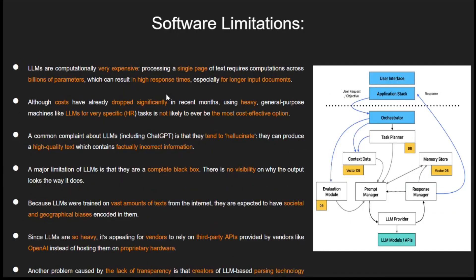Let's move on and learn more. Large language models come with a fair share of limitations. They are not exactly lightweight in terms of computation, which means processing text can take quite some time. And while the costs have come down, using these heavy-duty machines for super-specific tasks might not be very budget-friendly. Also, these large language models can sometimes get a bit imaginative, producing high-quality text that is a bit off in the facts department. They are like a black box with no clear window into how and why they generate these kinds of outputs. What about the biasness from their training data that might sneak in? They are so heavy that third-party APIs might be available to solve this problem.